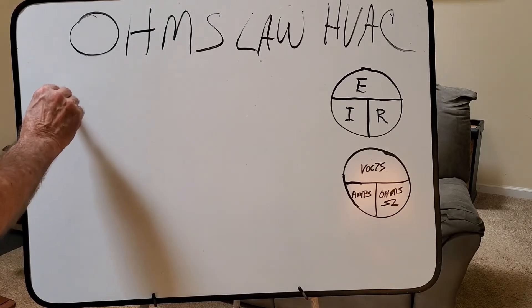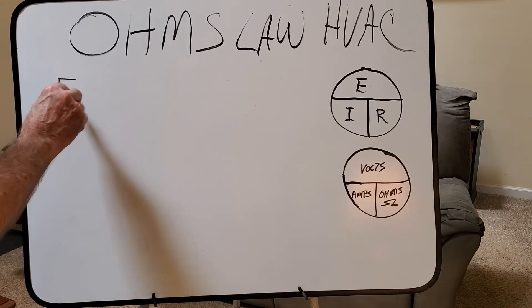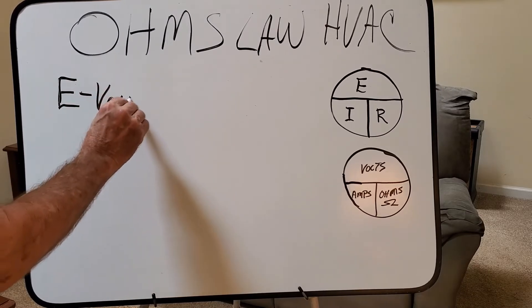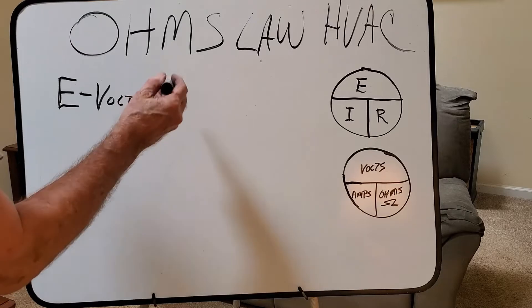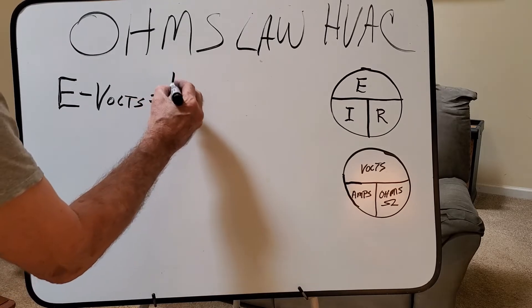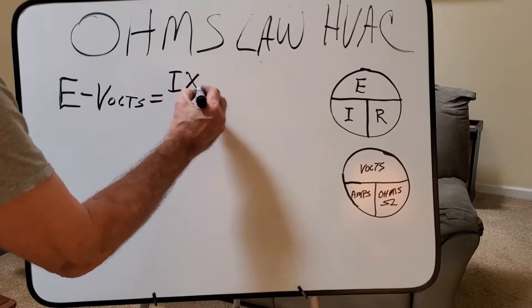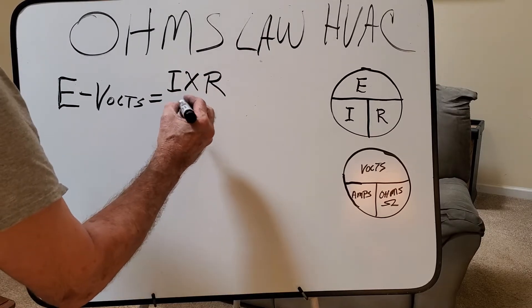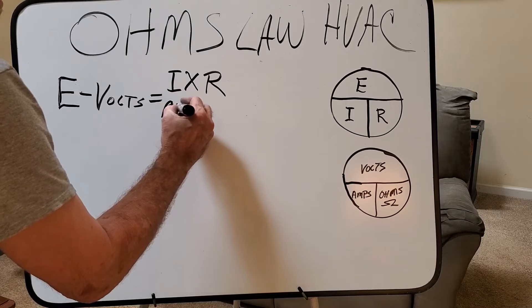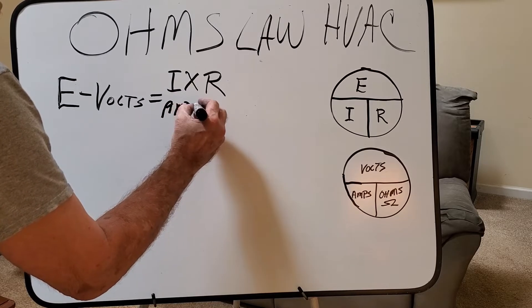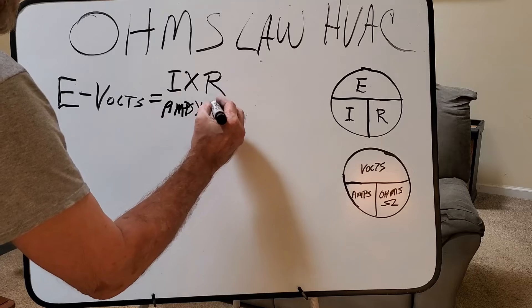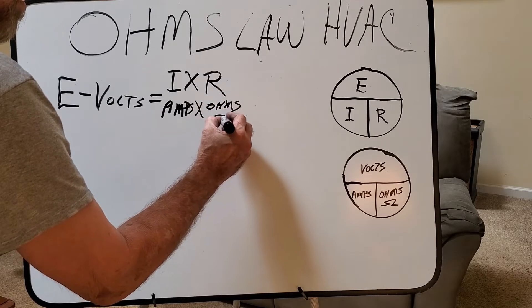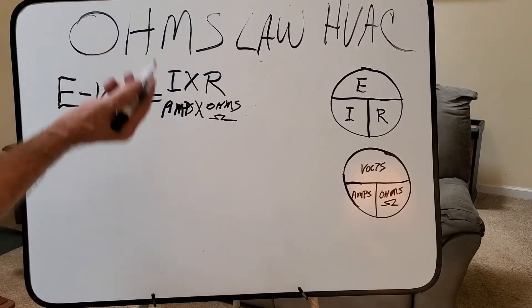And the first one here is going to be E, which means volts. And that's going to be I times R, or it's going to be amps times resistance. Got it? Not a problem.